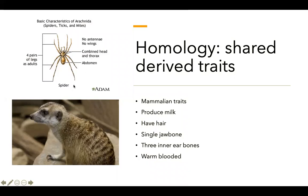Over here are spiders. The characteristics of arachnids — spiders, ticks, and mites — include eight pairs of legs, no wings or antennae, a combined head and thorax called a cephalothorax, and an abdomen. These are all traits that they share.